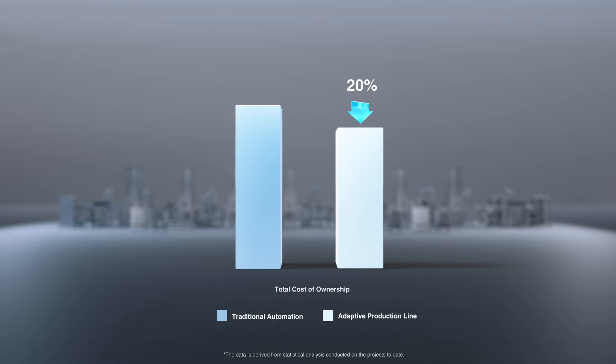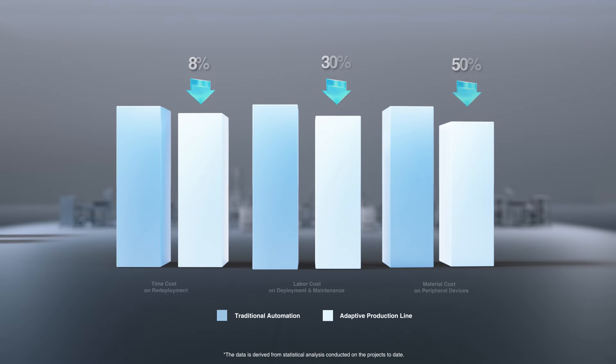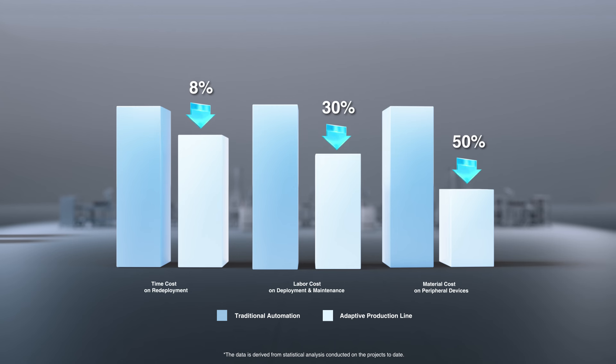With the total cost of ownership lowered through faster deployment, reduced maintenance, and increased automation rates, the Adaptive Production Line provides not just a unique suite of capabilities, but also an improved bottom line.